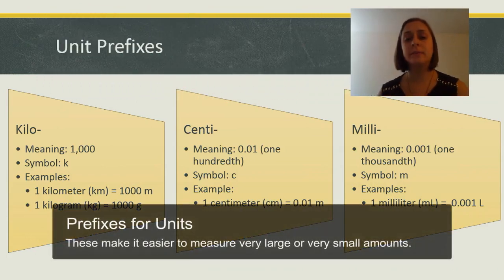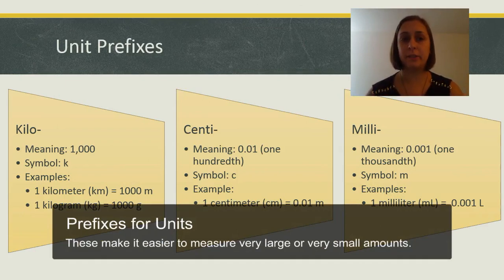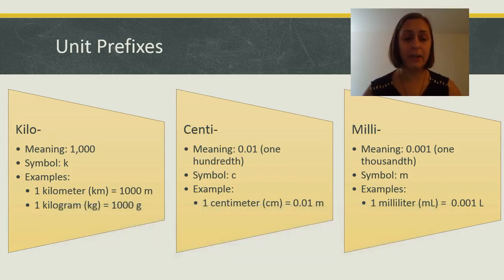Now, I mentioned kilometers before, but just now I said that meters was the unit that scientists use. Well, we have prefixes for our units so that we can measure very big things and very small things. Kilo means one thousand with the symbol K. One kilometer is one thousand meters.